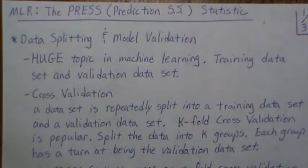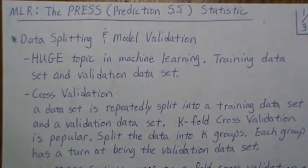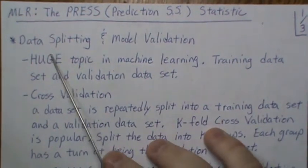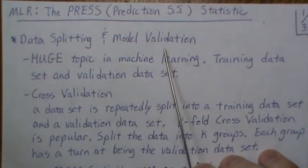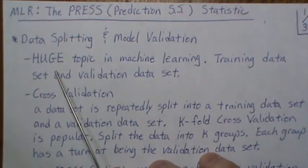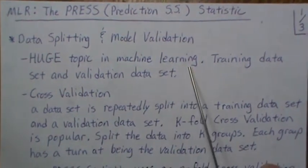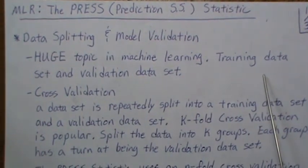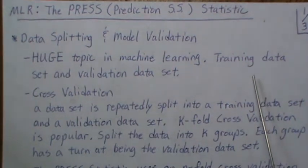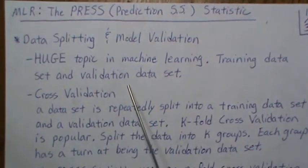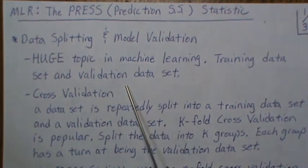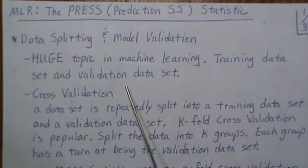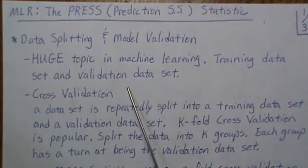In this video we're in the multiple linear regression setting and we're going to calculate the PRESS statistic, which is called the prediction sum of squares. It involves data splitting and model validation, which is a huge topic in machine learning where you take a large dataset, split it into a training dataset to fit the model, and then use that model on an independent validation dataset to see how well it does in predicting the data.